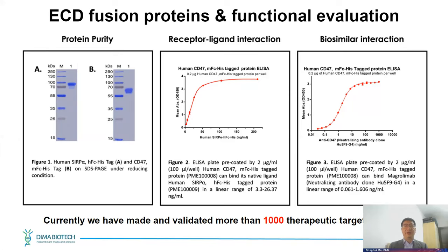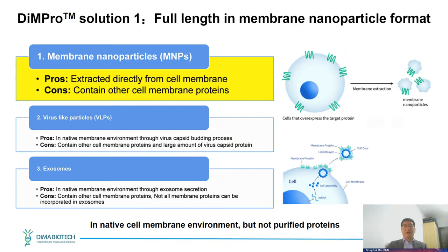Our ECD fusion protein technology platform purifies protein from HEK suspension cell systems. To ensure native function, we express the receptor ligand and conduct in vitro binding assays. If the target has an FDA-approved or clinical-trial antibody drug, we also synthesize biosimilar drugs to confirm the native structure. Currently we have made and validated more than 1,000 therapeutic target proteins using this approach.